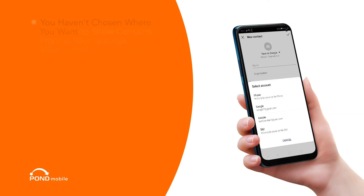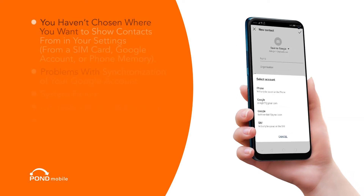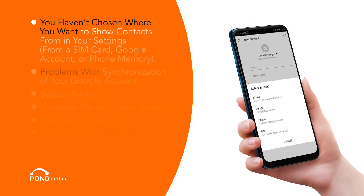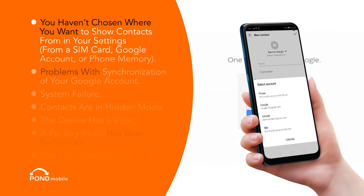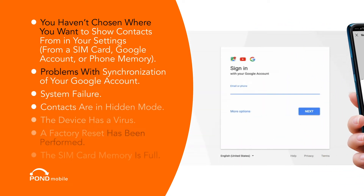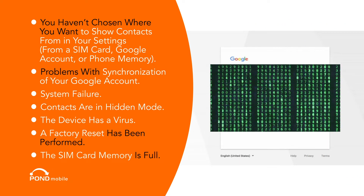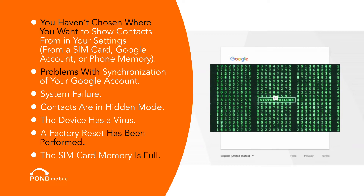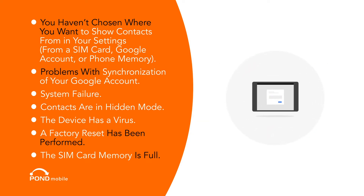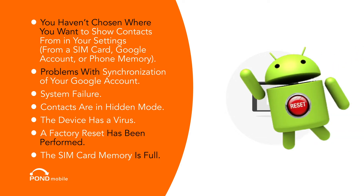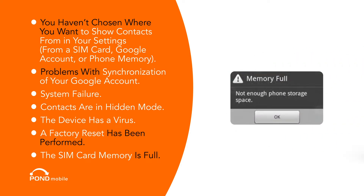What can cause this issue? You haven't chosen where you want to show contacts from in your settings — from a SIM card, Google account, or phone memory. Problems with synchronization of your Google account. System failure. Contacts are in hidden mode. The device has a virus. A factory reset has been performed. The SIM card memory is full.